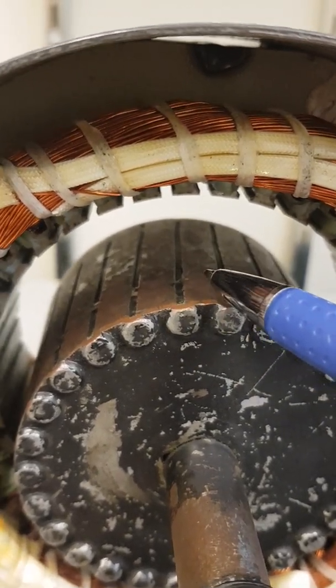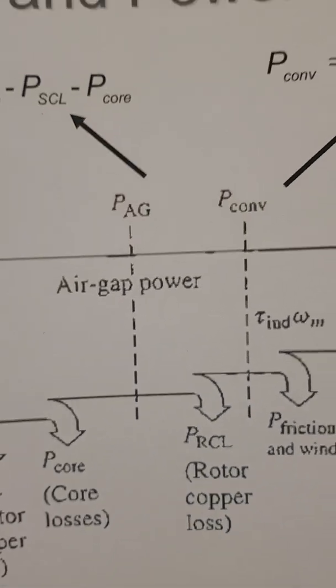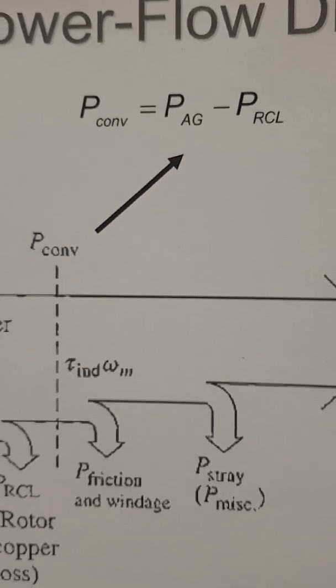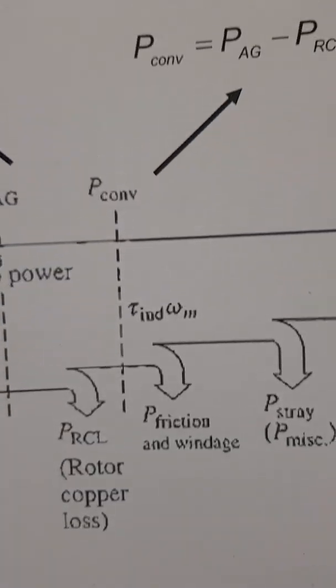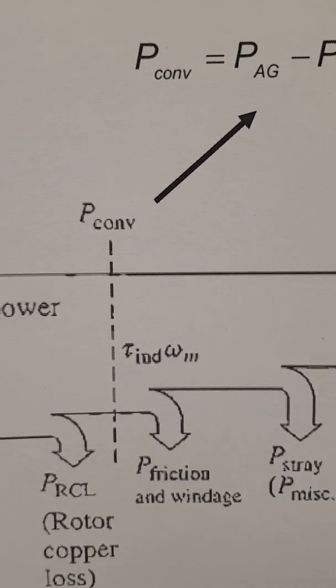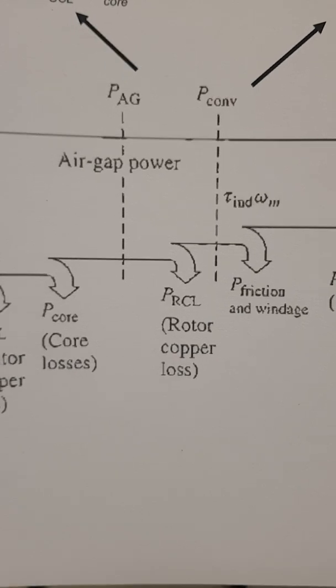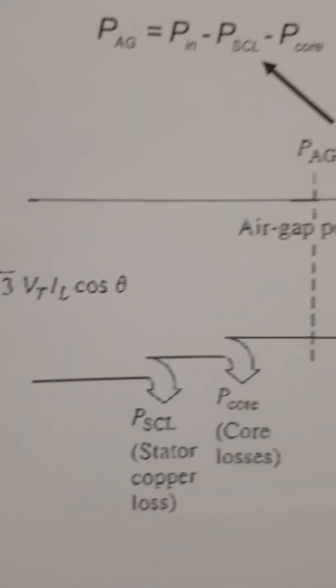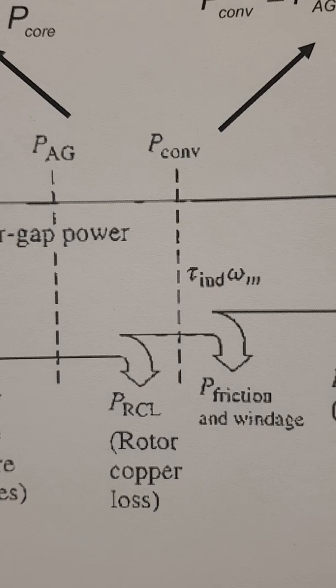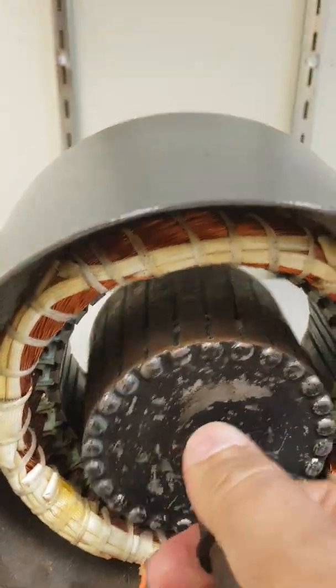Now if you subtract the air gap power—the power that makes it from the stator to the rotor—minus the copper loss from the rotor, we have what we call P_convert. This is the converted power from P_in and will be ready to be converted to mechanical power. But as the rotor starts to rotate, there will be friction loss and windage loss.